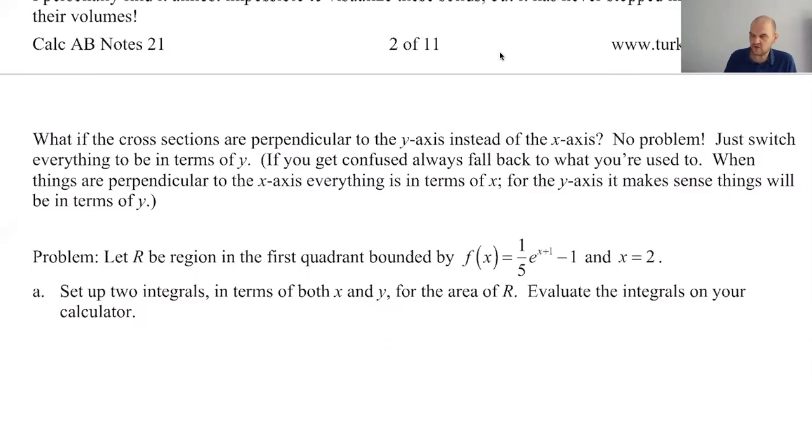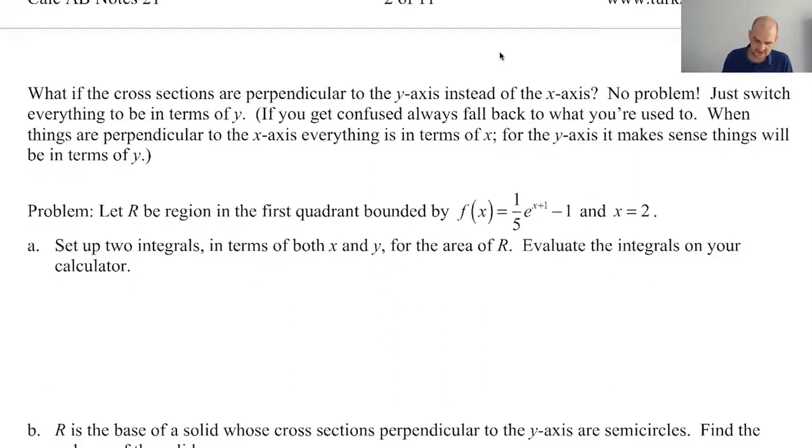So you end up just always doing the integral from A to B of the area of a cross-section, which will usually be S squared times something, where S is for the segment that you make, top takeaway bottom. Or if it's perpendicular to the Y-axis, it's going to be right takeaway left, which I think we're going to deal with here. So let's get started.